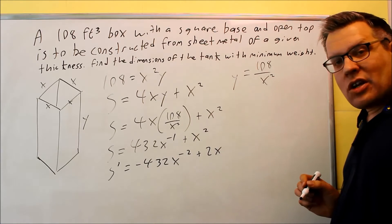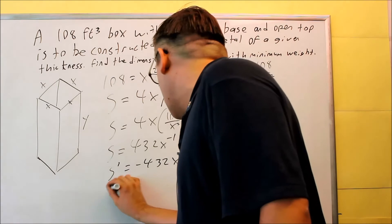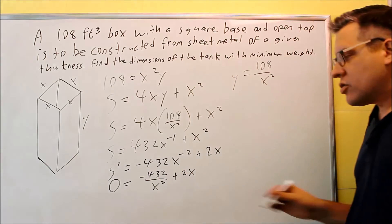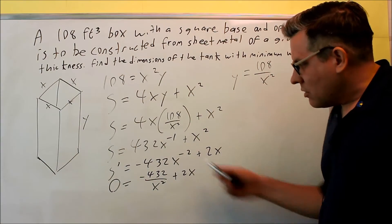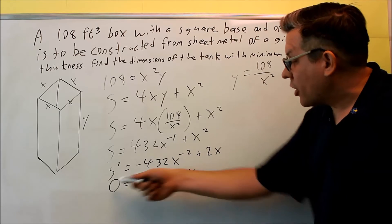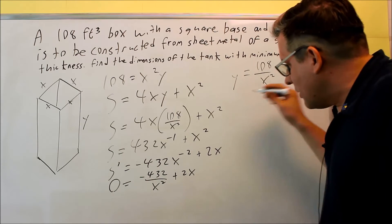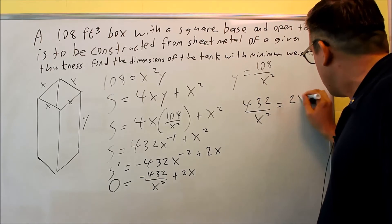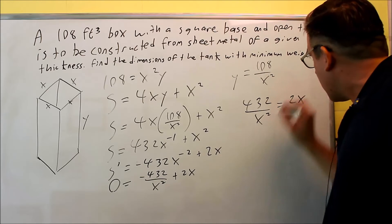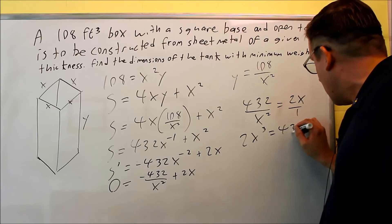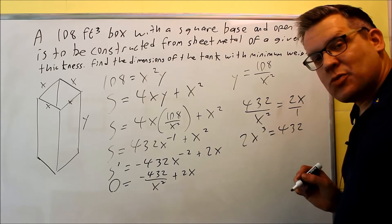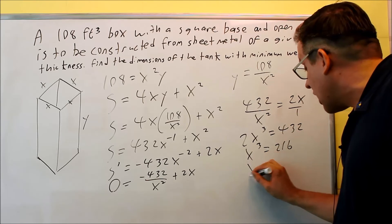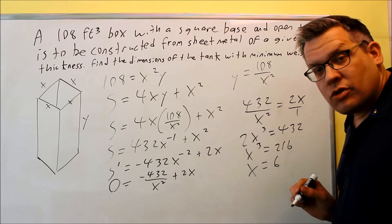I want to take that and set it equal to 0. So when I do that, I have 0 equals negative 432 over X squared plus 2X. I'll turn it back into a fraction. So I want to set this equal to 0 by bringing one term over the other side and cross-multiplying. So I get 432 over X squared equals 2X over 1. Cross-multiplying this, I get 2X cubed equals 432. I want to divide both sides by 2. I get X cubed equals 216. And then I want to take the cube root of both sides. When you do that, you're going to get X is equal to 6.